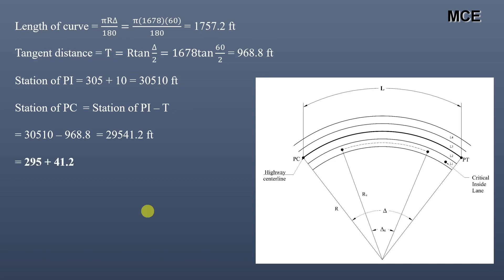Station of PT = station of PC + L = 29,541.2 + 1678 = 31,219.2 feet, or 312+19.2. This demonstrates the procedure for calculating the radius of the centerline of a horizontal curve.